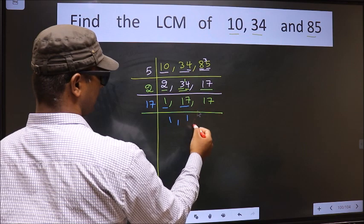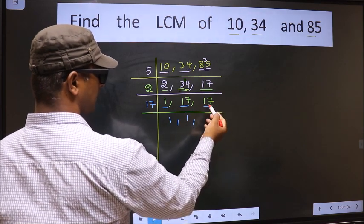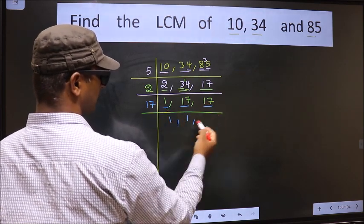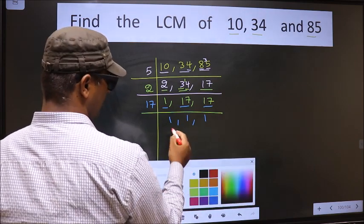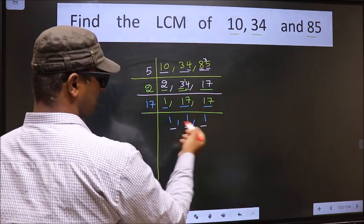So 17 once 17. The other number 17. When do we get 17 in the 17 table? 17 once 17. We got 1 in all the 3 places.